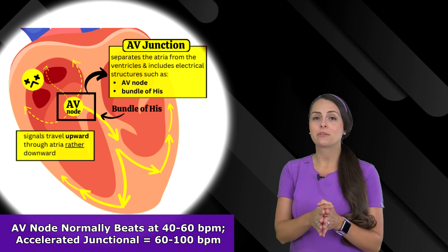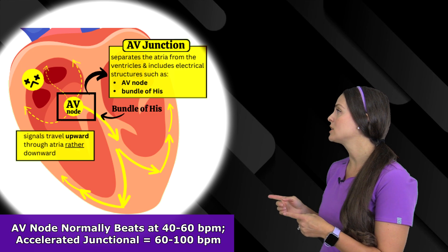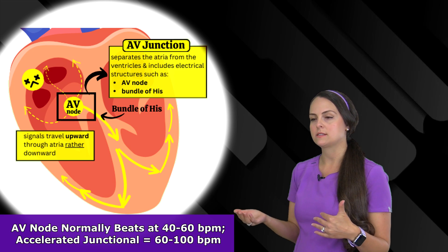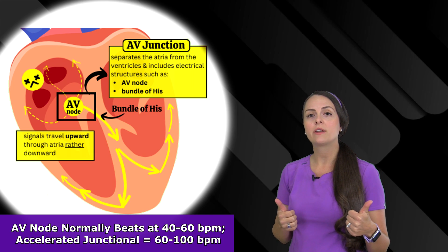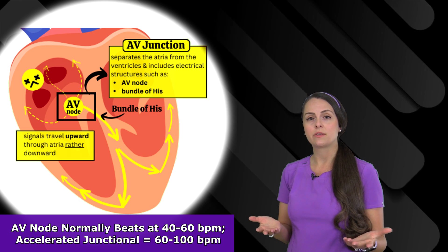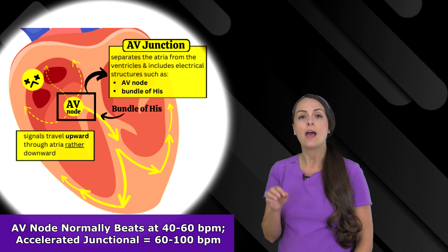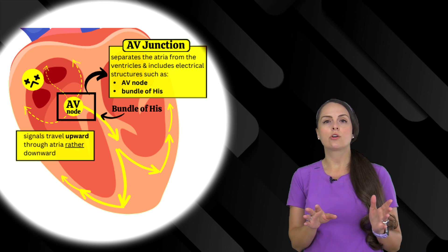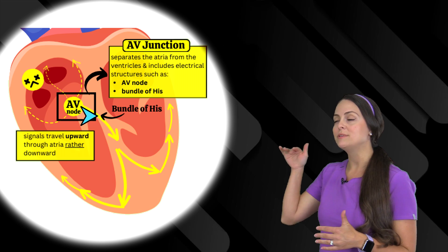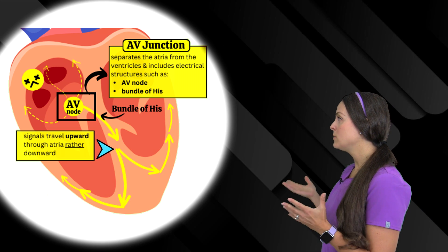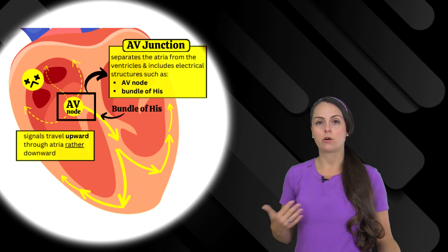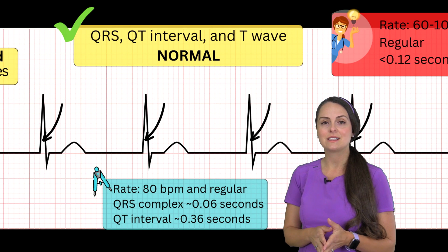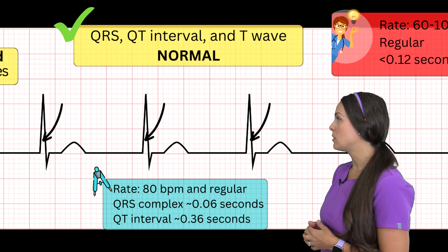In accelerated junctional rhythm, the electrical structures in the AV junction have an increased action potential. For instance, the AV node normally beats about 40 to 60 beats per minute, but if we increase its automaticity, we're going to have a faster rate. One of the hallmarks to remember is that accelerated junctional rhythm has a rate of 60 to 100 beats per minute. Electrical signals leave the AV junction and go down through the ventricles normally, causing normal ventricular depolarization. So you're going to see a normal, narrow QRS complex less than 0.12 seconds, a normal QT interval, and a normal T wave.